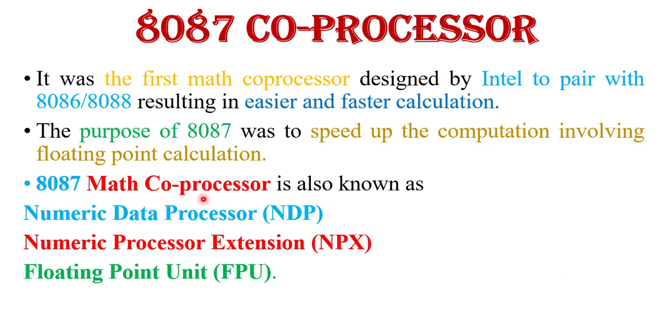8087 math coprocessor is also known as NDP that is numeric data processor, numeric processor extension that is NPX, and floating point unit that is FPU.